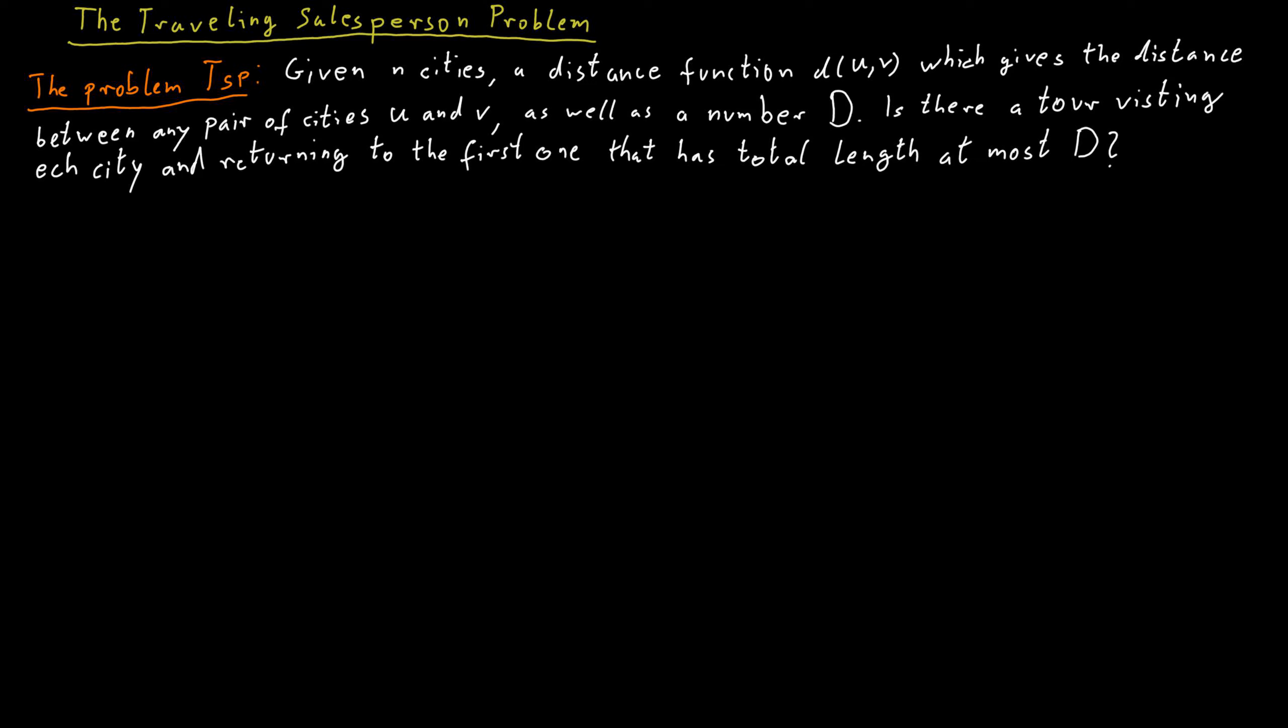We can relate the traveling salesperson problem to a problem we've already discussed and that is Hamiltonian cycle. So given the graph, does there exist a simple cycle containing every vertex of the graph? I claim that Hamiltonian cycle polynomial time Karp reduces to TSP.